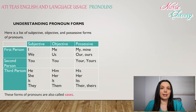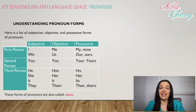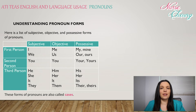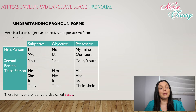Second person subjective pronoun: you. Second person objective pronoun: you. Second person possessive pronoun: your or yours. And lastly, third person subjective pronouns: he, she, it, and they. Third person objective pronouns: him, her, it, and them. And third person possessive pronouns: his, her, its, their, and theirs.